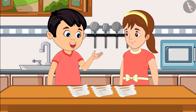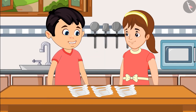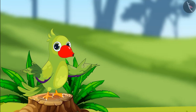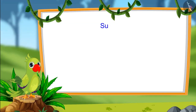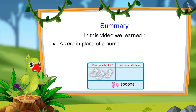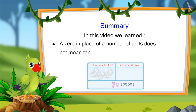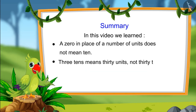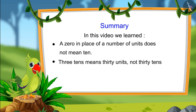Okay, now I have understood. You are right, Aarti. Come on, let's take spoons for the guests. So, children, that's all for today. In this video, we learned that 0 does not mean 10 at the end of a number. And 3 tens means 30 units, not 30 tens. I hope you would have understood this topic.